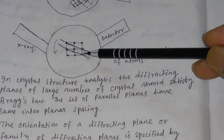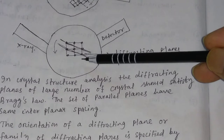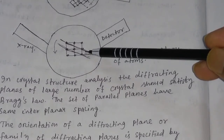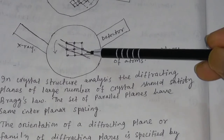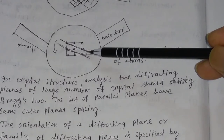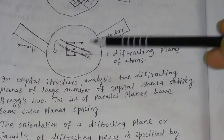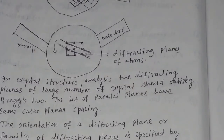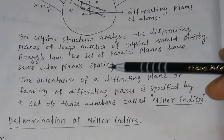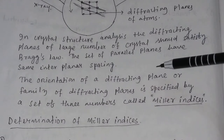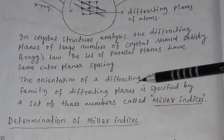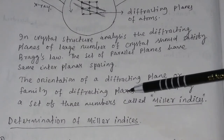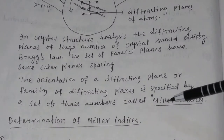The set of parallel planes have the same interplanar spacing — the distance between the parallel planes is called the interplanar spacing. The orientation of a diffracting plane, or the family of diffracting planes, is specified by a set of three numbers called Miller indices.